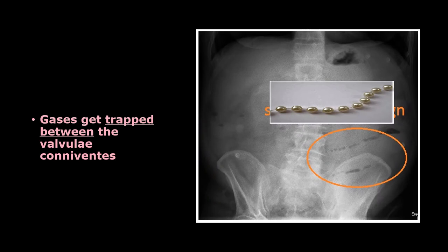In small bowel obstruction, the gases that are not able to pass through the obstruction get trapped between the folds of the mucosa — that is, between the valvulae conniventes. When this is viewed on an X-ray, it is seen as a linear arrangement of air bubbles, as you can see arranged linearly here.